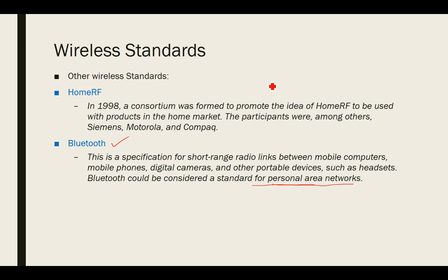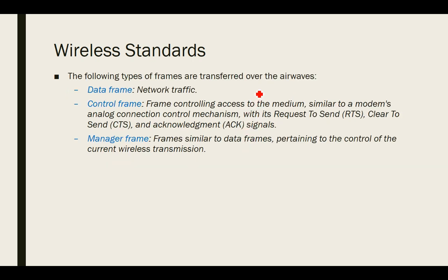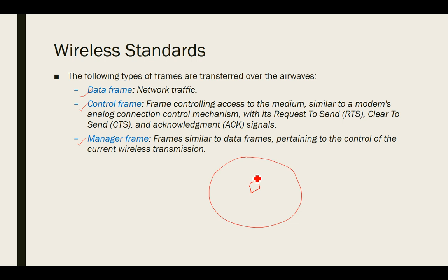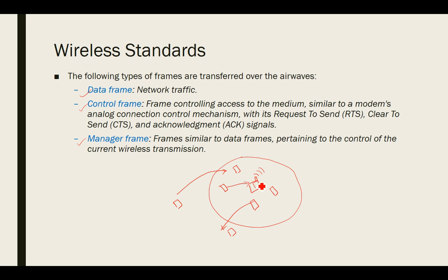When using a wireless network, three types of frames are transmitted. The first is the management frame, which is similar to a data frame but pertains to control of the current wireless transmission — for example, managing which devices enter or leave the wireless range, and handling mobility between home and foreign networks in mobile IP.